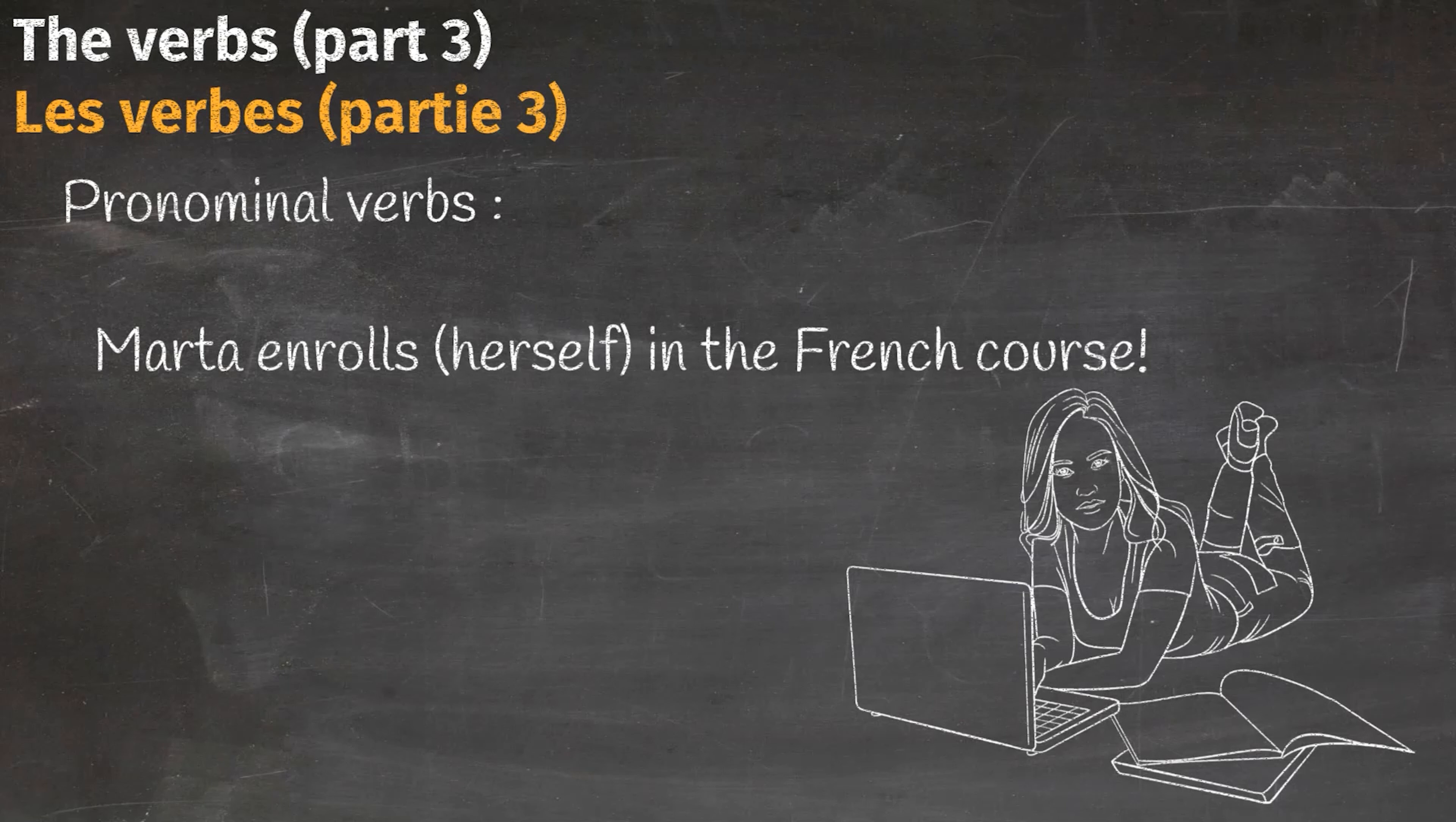Imagine I want to say 'Marta enrolls herself in the French course'. In this example, Marta is both subject and object of this sentence. And that is exactly where we need to use pronominal verbs. To enroll oneself is 'se inscrire'. Now, let's see how we can conjugate a pronominal verb in French language and what is the difference between a pronominal verb and a non-pronominal verb.